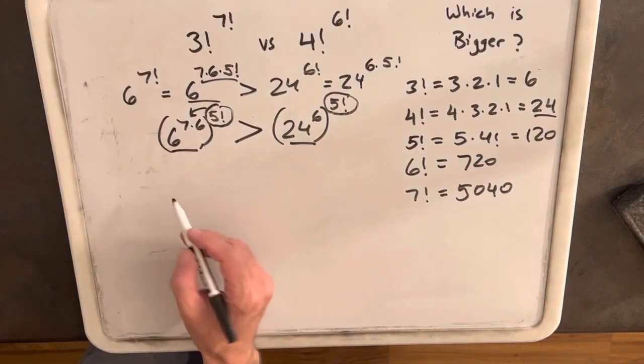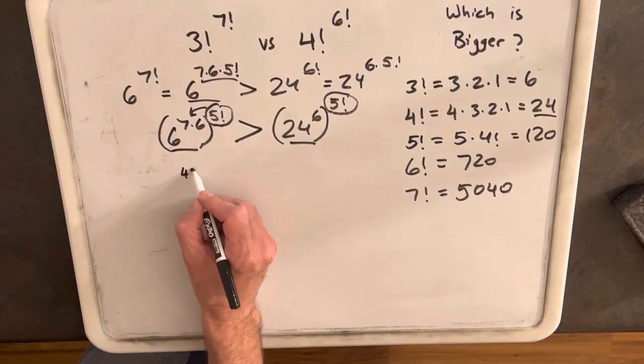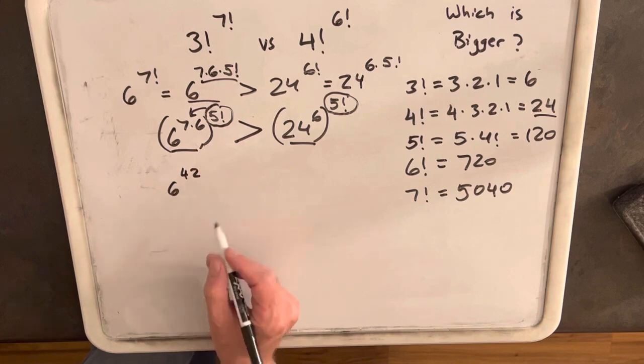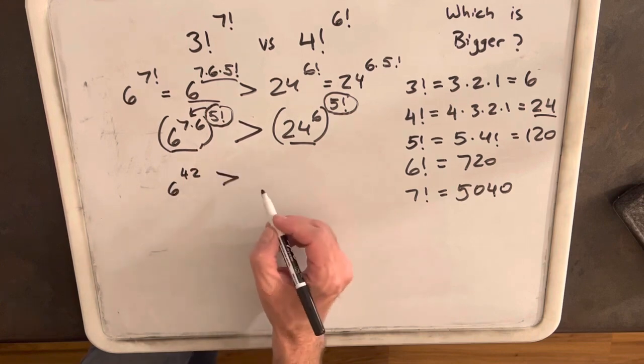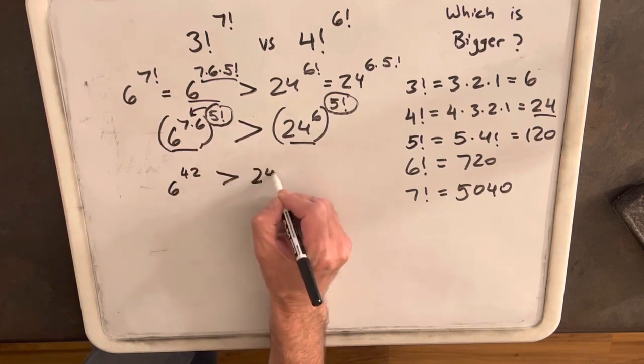So then for the left side, let's rewrite 7 times 6 as 42. So we'll have 6 to the 42 is greater than 24 to the 6.